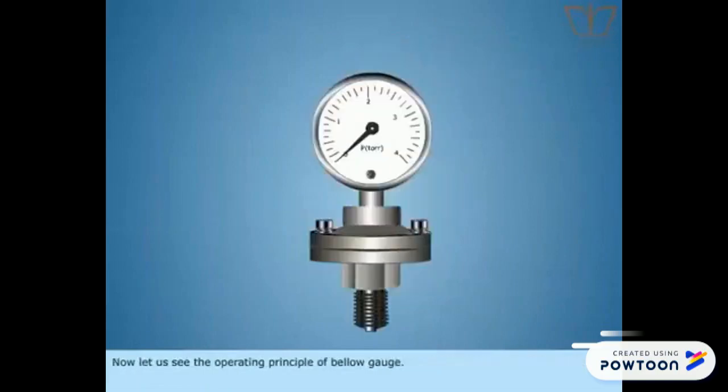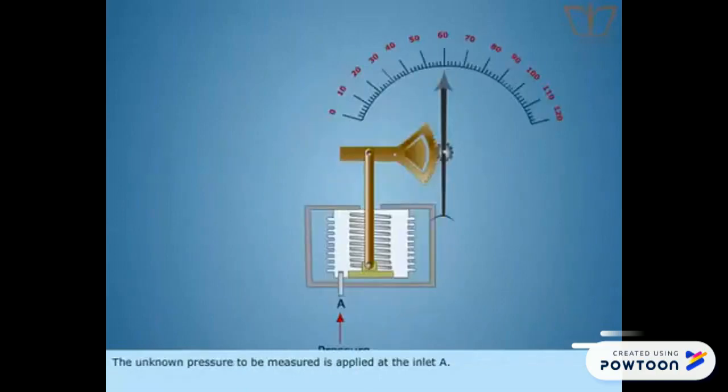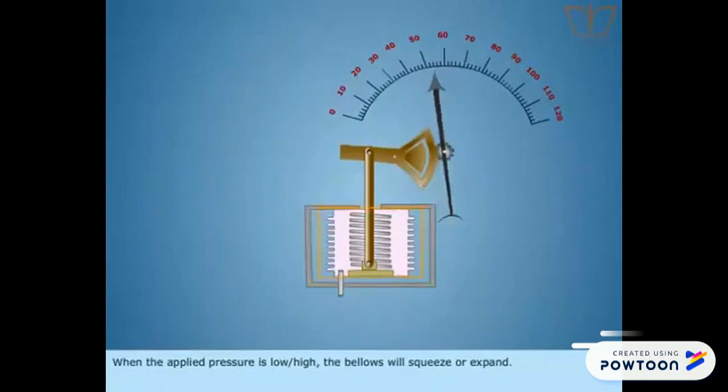Let us see the operating principle of bellows gauge. The unknown pressure to be measured is applied at the inlet A. When the applied pressure is low or high, the bellows will squeeze or expand.